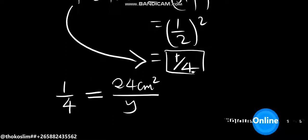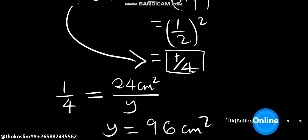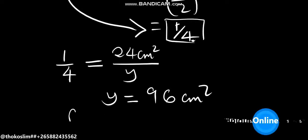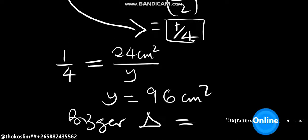So if we cross multiply: y times 1 equals y, and that equals 4 times 24. Now 4 times 24: 4 times 4 is 16, and then 4 times 2 is 8, giving us 96. So the area of the bigger triangle is 96 centimeters squared. That's the answer.